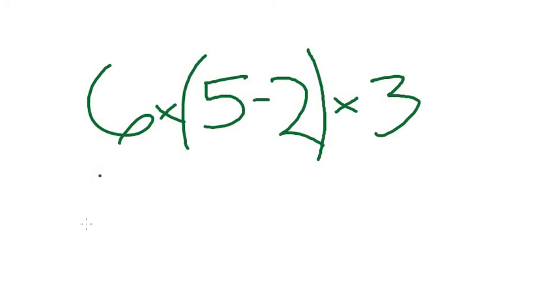So I'm going to bring this down 6 times and this is going to simplify to 5 minus 2, it's going to be 3. And then this would come back down there as well. So I'm left with 6 times 3 times 3 and you can simplify that on your own.